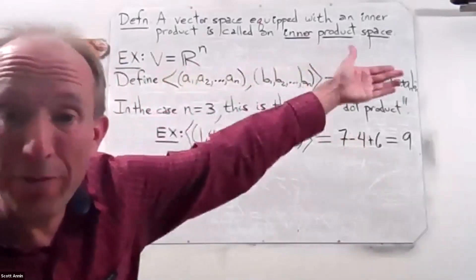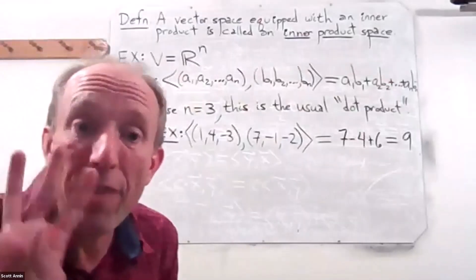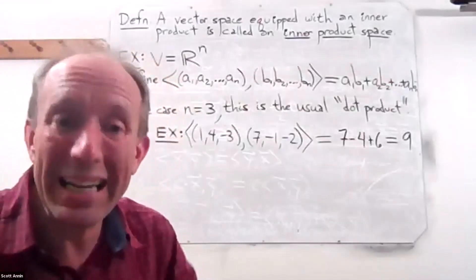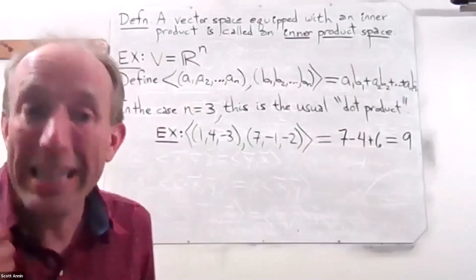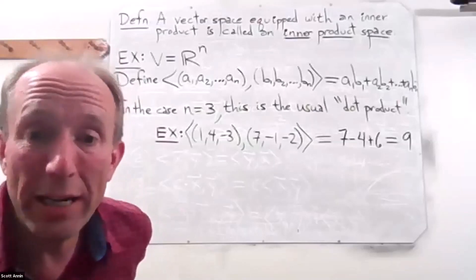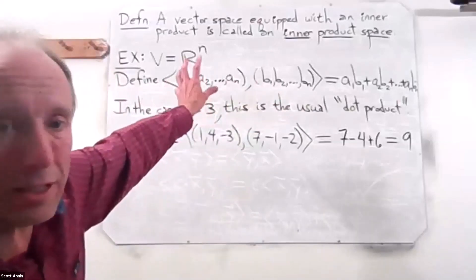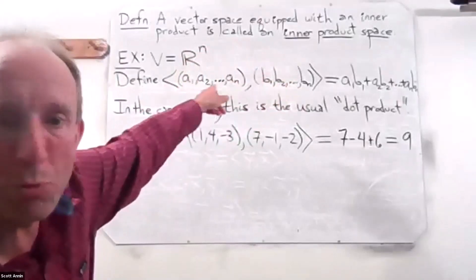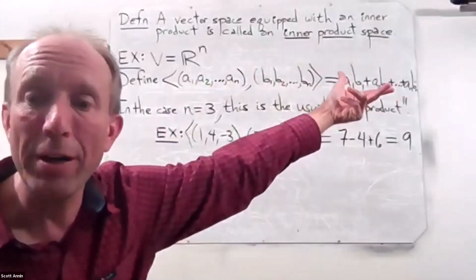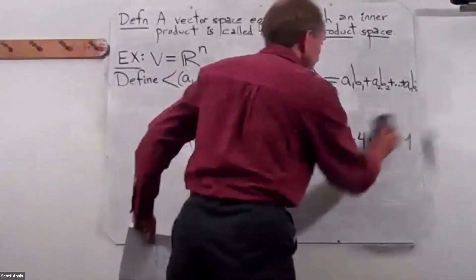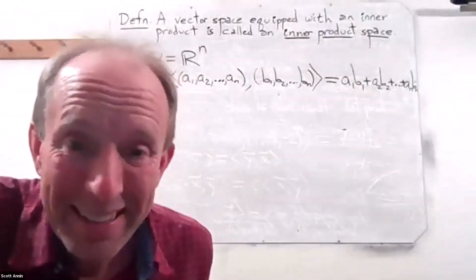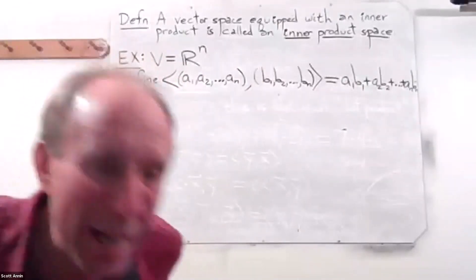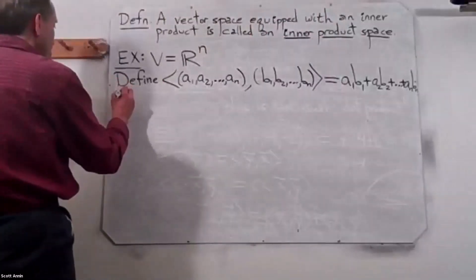I wrote down this definition of this inner product, but technically I need to verify those four axioms. You're going to be doing that in the homework for Friday — there will be a few examples where they want you to actually verify the axioms of an inner product space. Let's go ahead and do that. The axiom that often doesn't hold is the first one, so I like to put that one first in my list. Let's check the axioms.